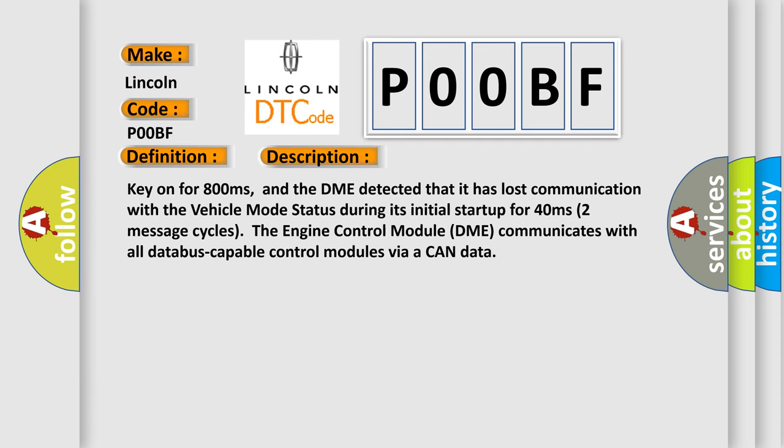Key on for 800 milliseconds, and the DME detected that it has lost communication with the vehicle mode status during its initial startup for 40 milliseconds, two message cycles. The engine control module DME communicates with all database-capable control modules via a CAN data.